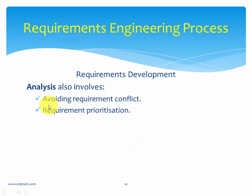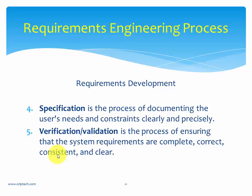Analysis is the process of refining the users' needs and constraints. It involves two important things: avoiding requirement conflicts and requirement prioritization. Since there are many stakeholders giving requirements, two or more stakeholders may give conflicting requirements, and you need to resolve those ambiguities. When you have many requirements, you also need to prioritize them — deciding which requirement gets first priority and which gets put on hold for later development. Both conflict resolution and prioritization fall under the analysis stage.